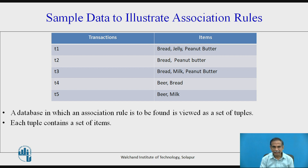Such an example database is one in which the association rules are to be found. This is viewed as a set of tuples, and each tuple contains a set of items.